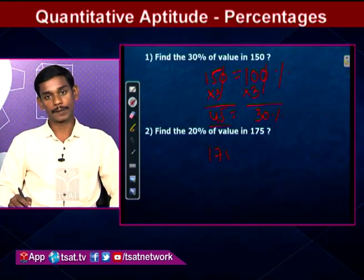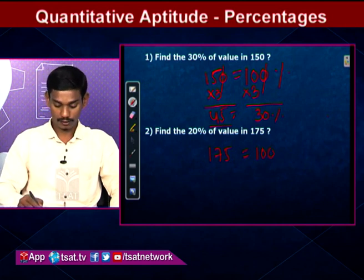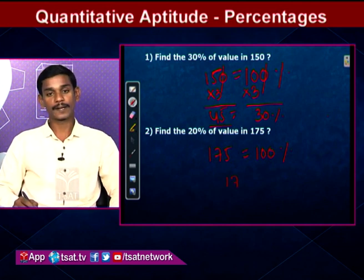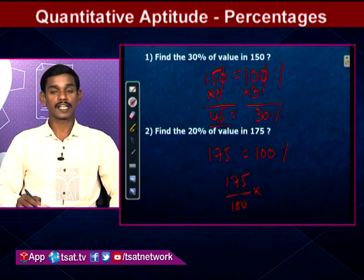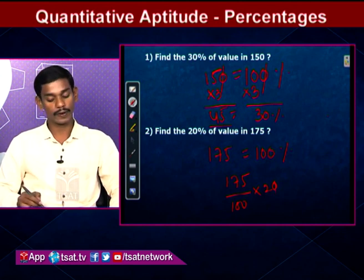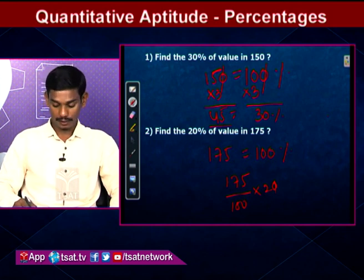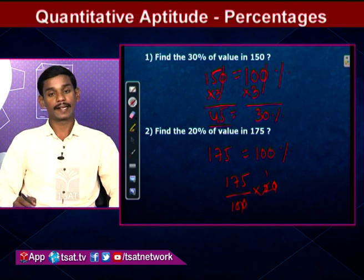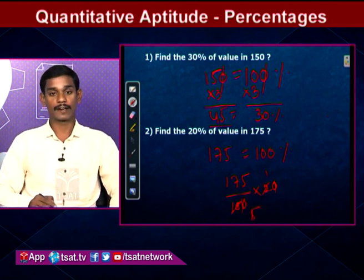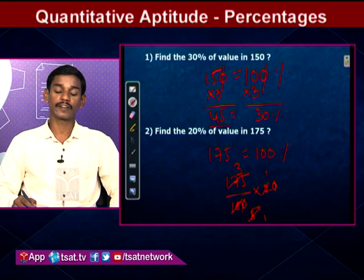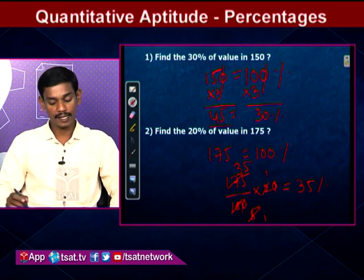Find 20% of 175. Here 175 = 100%. There's no easy zero cancellation, so use the formula: 175/100 × 20. Zeros cancel to give 175/5 = 35. So the value of 20% in 175 is 35.